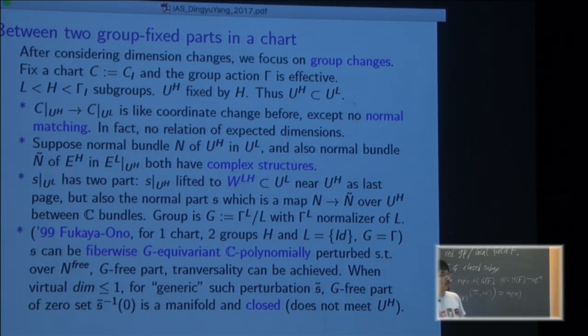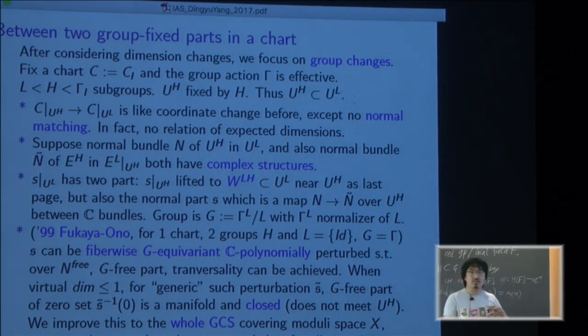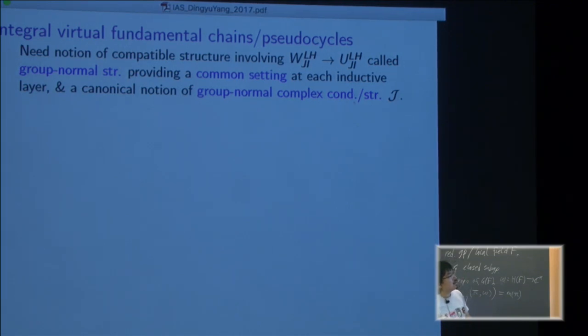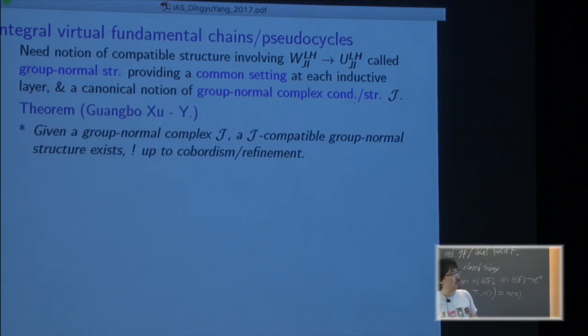Which makes sure that for the free part in the domain bundle you can achieve transversality. And if the virtual dimension is one or zero, which is only needed to define Floer homology, if you do things generically the free part do not see the stabilizer. Non-trivial part means it's closed so the thing is kind of integral. And we improve this to the whole good coordinate systems and the past generalized this statement. So we need some notion of different groups and different charts and everything compatible, providing a common setting to apply the usual thing.